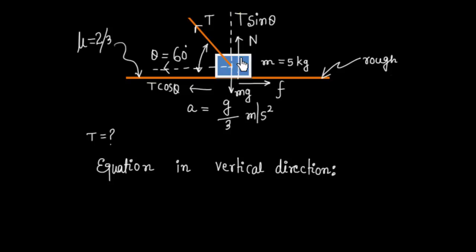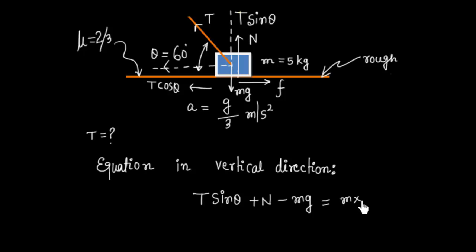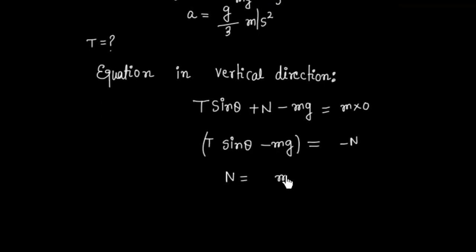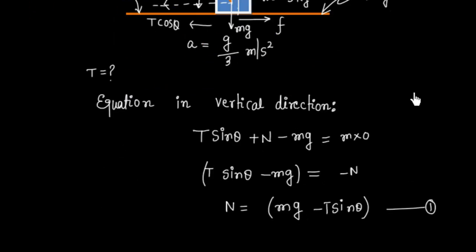In the vertical direction, there is no acceleration, so the total upward force equals zero. We write: T sin theta + N - mg = 0. Rearranging, N = mg - T sin theta. This is equation number one.